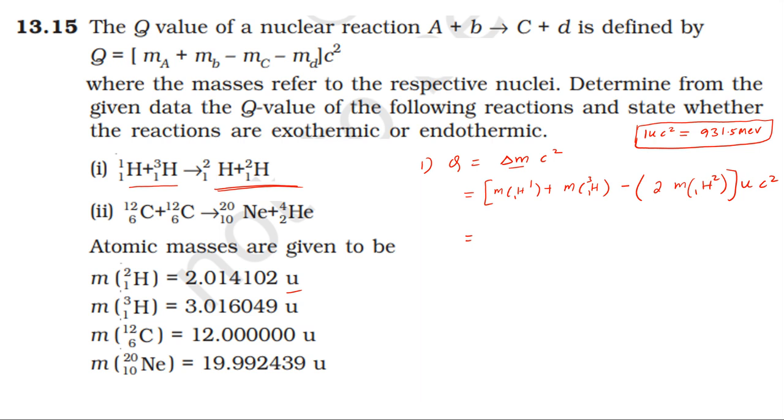In terms of atomic mass units, mass of tritium H3 is 3.016049 u, and mass of deuterium H2 is 2.014102 u into atomic mass units into C squared.